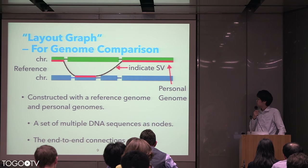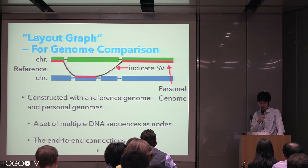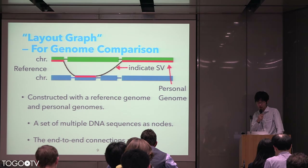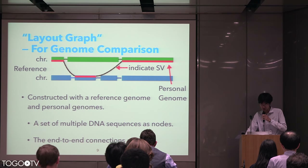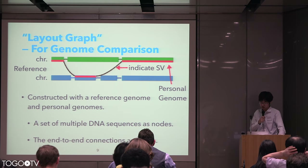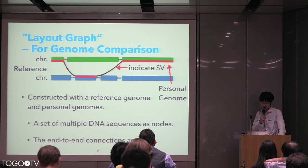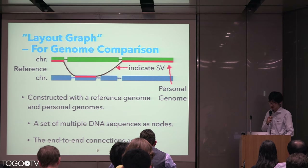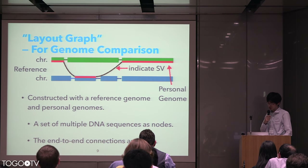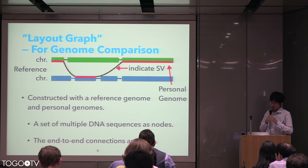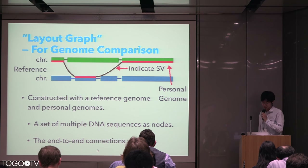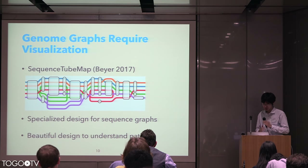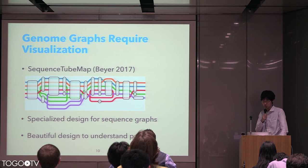The layout graph is constructed with one reference genome and personal genomes. Currently, I treat it as a relationship between one reference genome and one personal genome. This graph is a type of sequence graph or variation graph. So, this is a bidirected graph, and nodes are a set of multiple DNA sequences, and the end-to-end connections between nodes are edges. Edges not appearing on the reference genome indicate genomic rearrangement.